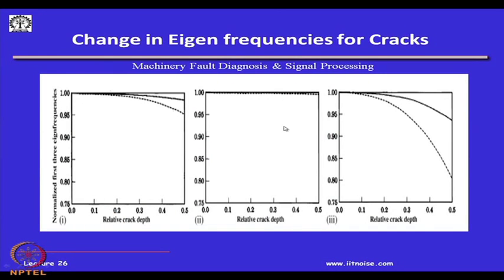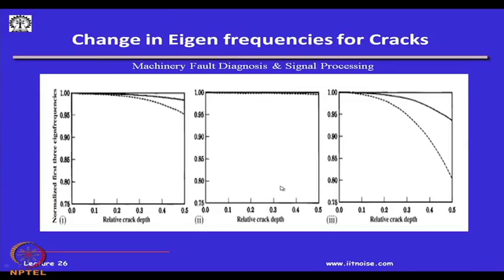Regarding the change in Eigen frequencies: plotting the normalized first three Eigen frequencies against crack depth, you will see that at some particular frequencies they are very sensitive to changes in Eigen frequency. Eigen frequencies and mobility are true indicators that cracking has occurred. You need to normalize them with respect to the original natural frequency to see the variation due to cracking — absolute measurements alone are not sufficient.